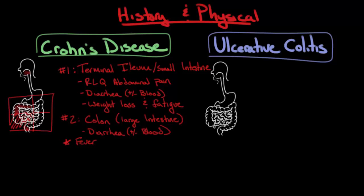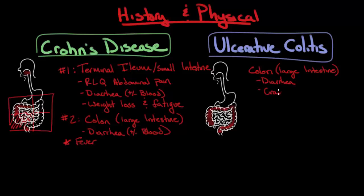For ulcerative colitis, the lesions occur in a continuous manner rather than the discontinuous skip pattern of Crohn's disease. It typically begins in the rectum and then moves backwards through the large intestine, almost never leaving the large intestine. Similar to Crohn's disease, if the large intestine is inflamed, the most common presentation is diarrhea with diffuse, crampy abdominal pain. It's also important to note that diarrhea in ulcerative colitis is often bloody — more frequently bloody than in Crohn's disease, although bloody diarrhea can occur in either type.